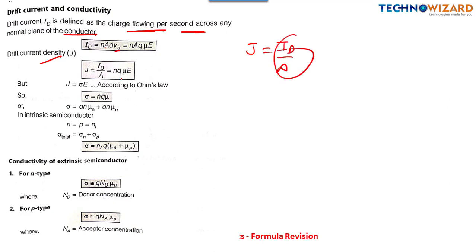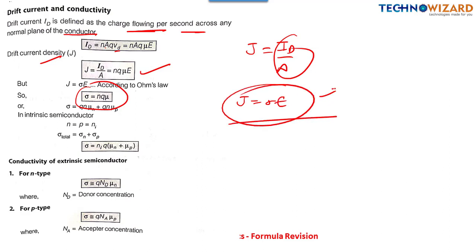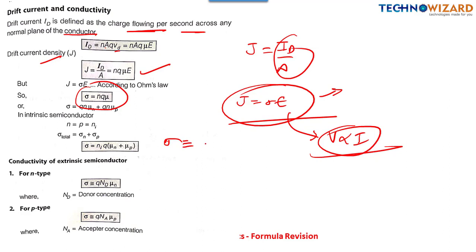Current density is J = I/A = nqμv. From Ohm's law, J = σE, so conductivity σ = nqμ. For both carriers: σ = nqμn + pqμp. For intrinsic semiconductors where n = p = ni, total conductivity σ = ni · q · (μn + μp). The same formula applies for N-type and P-type conductivity.